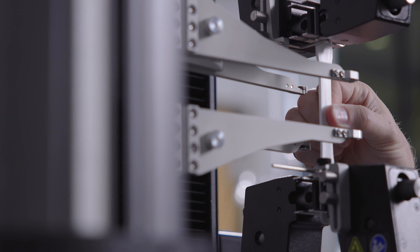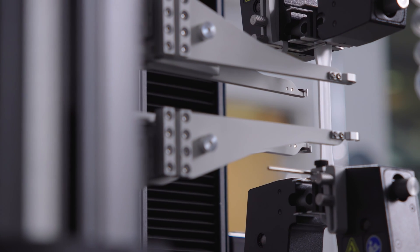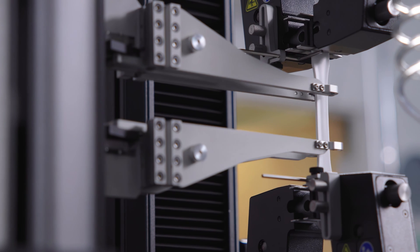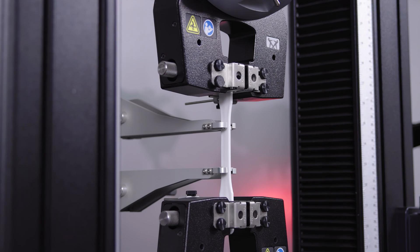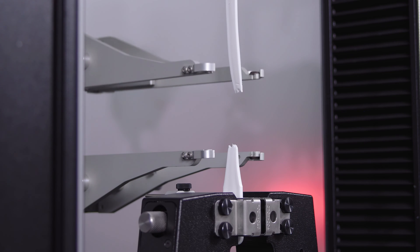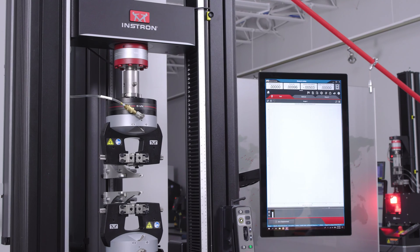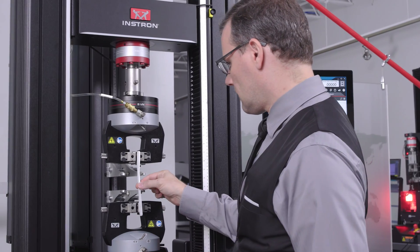Automatic contacting extensometers improve accuracy and repeatability in your strain measurement while increasing testing throughput. The arms automatically attach to specimens at the start of testing and return to start position after testing. This saves time and simplifies the process for operators.